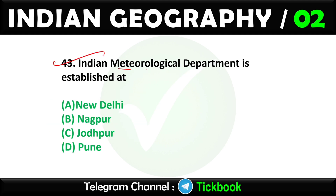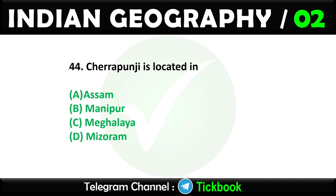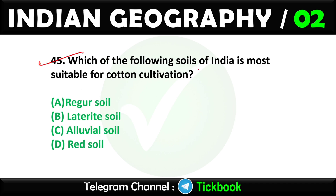Question forty-three: Indian Meteorological Department is established at. Option number A: New Delhi. Question forty-four: Cherrapunji is located in. Question forty-five: Which of the following soils of India is most suitable for cotton cultivation? Option number A: Regur soil.